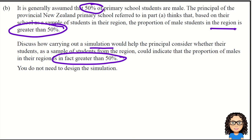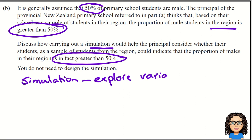So in this particular case, the main thing we want to do is recognise that when we do any kind of simulation, the whole purpose is to explore how much variation there is. In this case, we've got one single school, and we don't know whether this one snapshot of data from July 2018 is representative of lots of years of data or lots of other schools in that region. We've only got this one estimate.